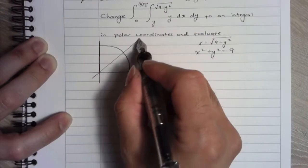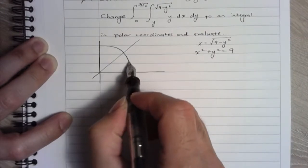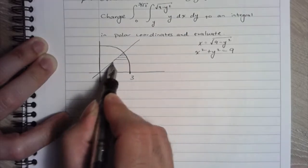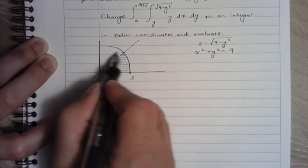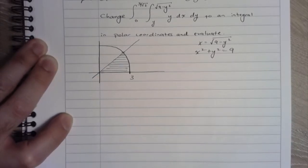So let me sketch what I can of a segment of a circle here. All right, so now the x's are going from y out to the square root of 9 minus y squared. So these are the x's. And the y is going to probably about that point, but we're going to verify that in a second.